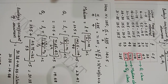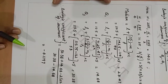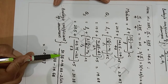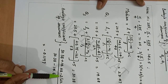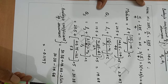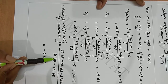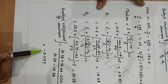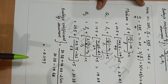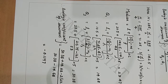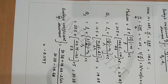Hence Bowley's coefficient of skewness is given by (Q3 + Q1 - 2 × median) / (Q3 - Q1), which equals -0.1197. This shows negative skewness. Thank you.